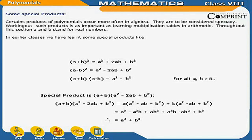Special Products: Certain products of polynomials occur more often in algebra and are to be considered specially. Working out such products is as important as learning multiplication tables in arithmetic. Throughout this section, A and B stand for real numbers. From earlier classes: (A+B)² = A²+2AB+B², (A−B)² = A²−2AB+B², and (A+B)(A−B) = A²−B², for all A, B belonging to real numbers.